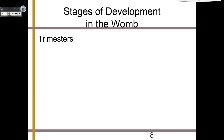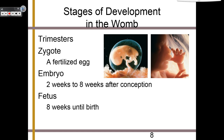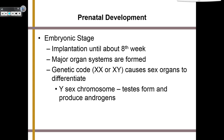There are three trimesters in terms of developing within the womb. In the first trimester, sperm meets egg and a zygote is created — a zygote is just a fertilized egg. From being a zygote, you will eventually transform into an embryo, which lasts from two weeks to eight weeks after conception. Then you will be a fetus, from eight weeks until the day you are born. The first trimester is known as the germinal stage, taking place from conception through implantation, when the zygote divides and becomes implanted in the uterine wall. During the embryonic stage, which occurs from implantation until about the eighth week of pregnancy, major organ systems are formed, such as your genetic code — XX or XY — causing sex organs to differentiate.